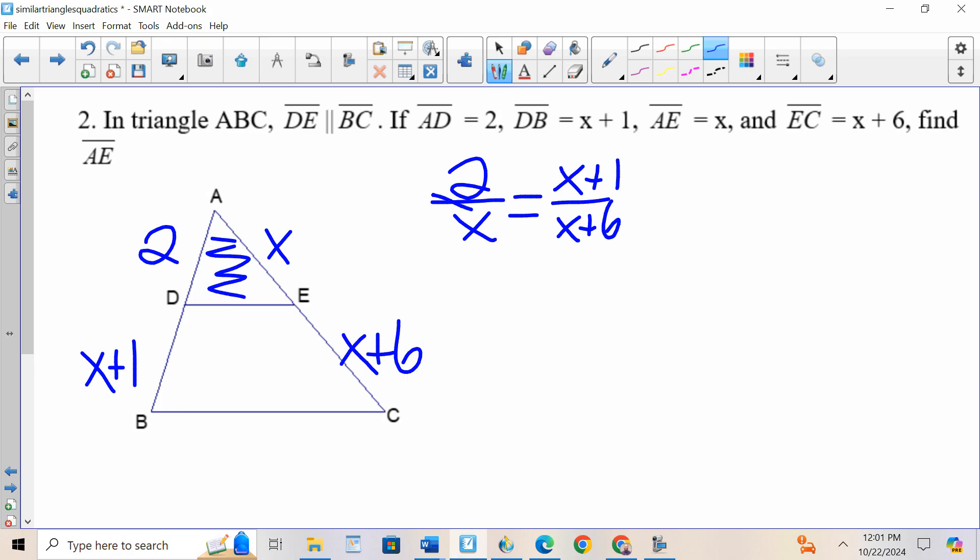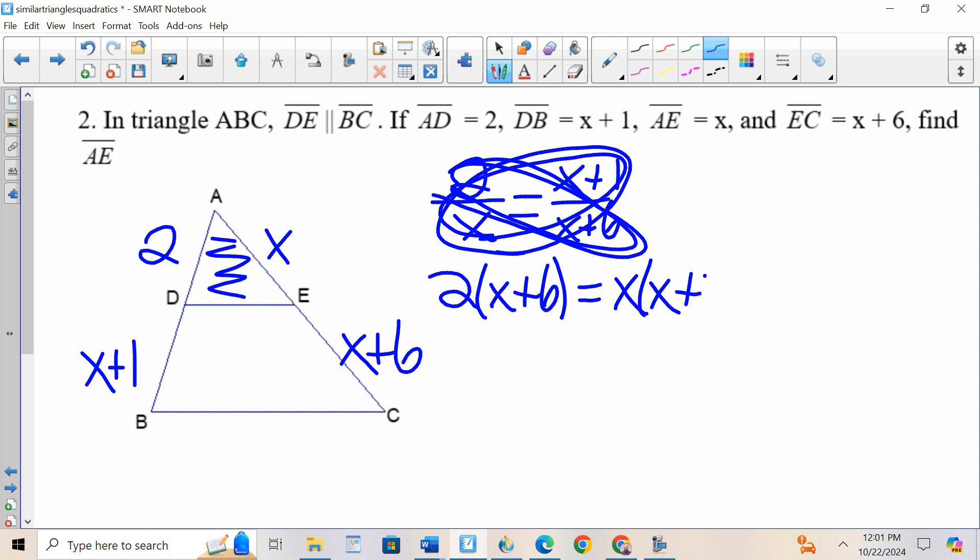Now that I have my proportion, I cross multiply and solve. 2 times X plus 6, I'm going to write as 2 parenthesis X plus 6, X times X plus 1, X parenthesis X plus 1.